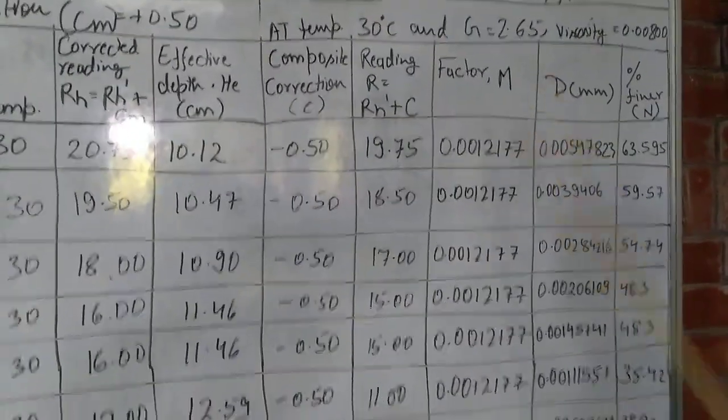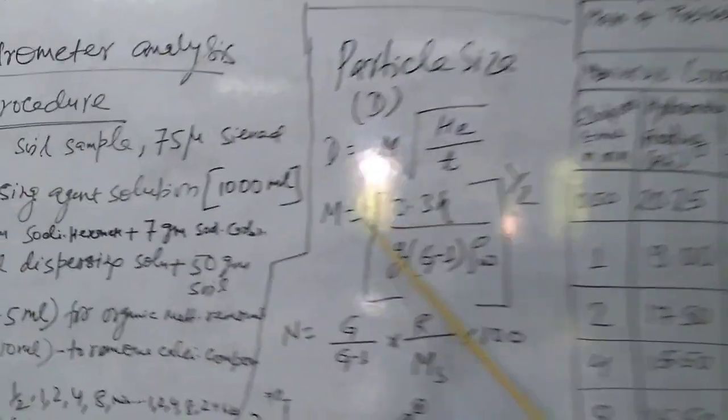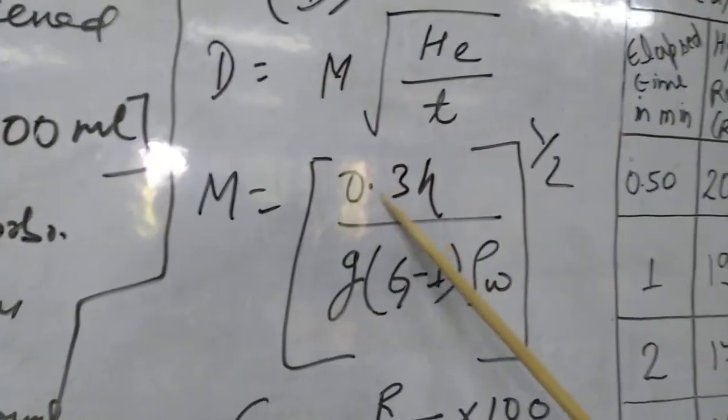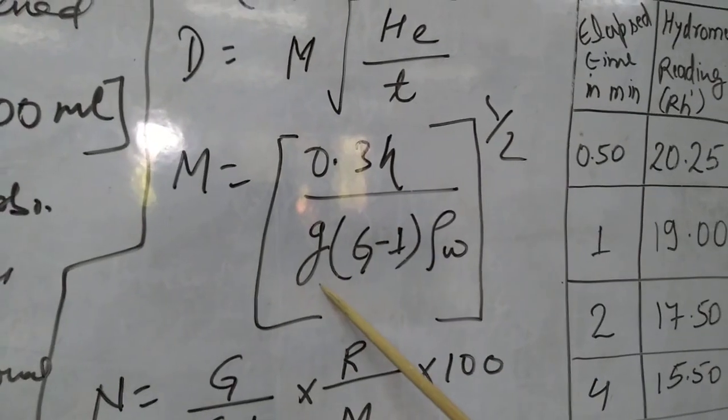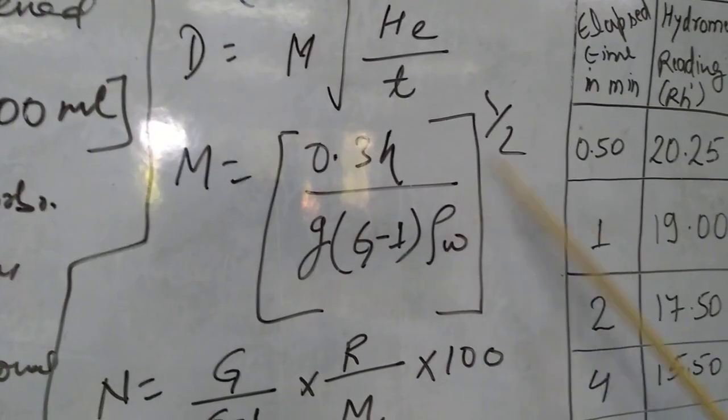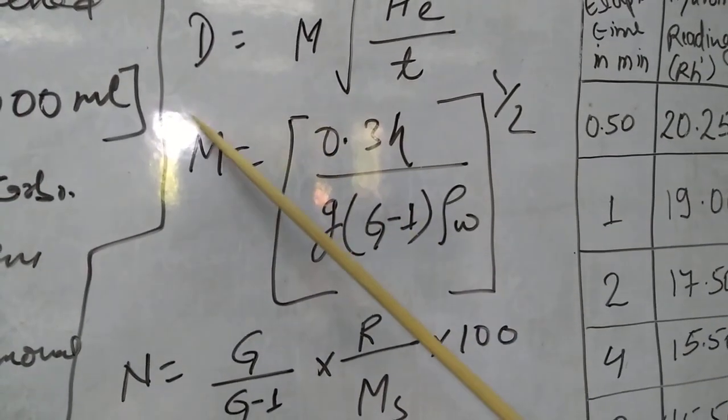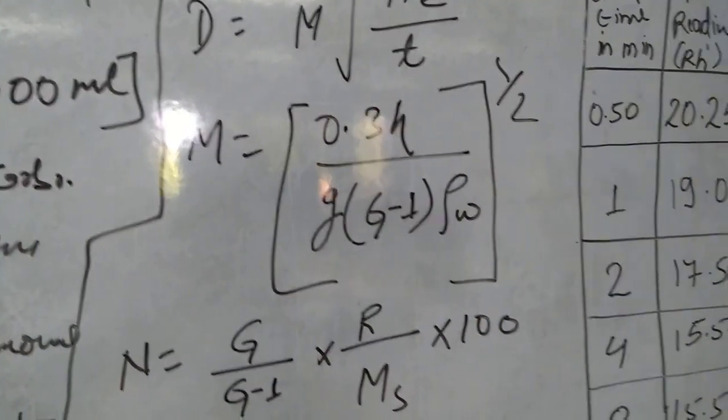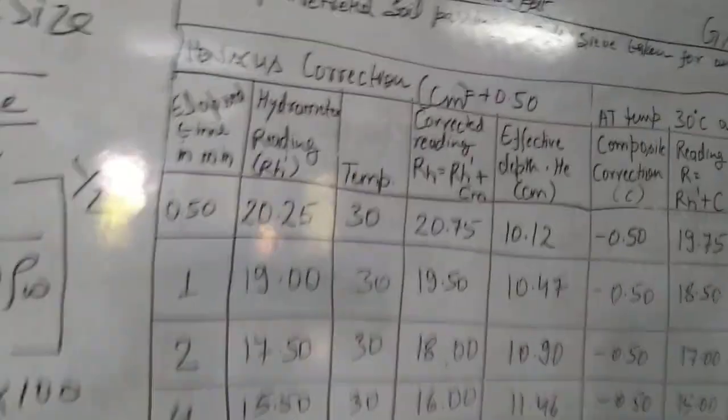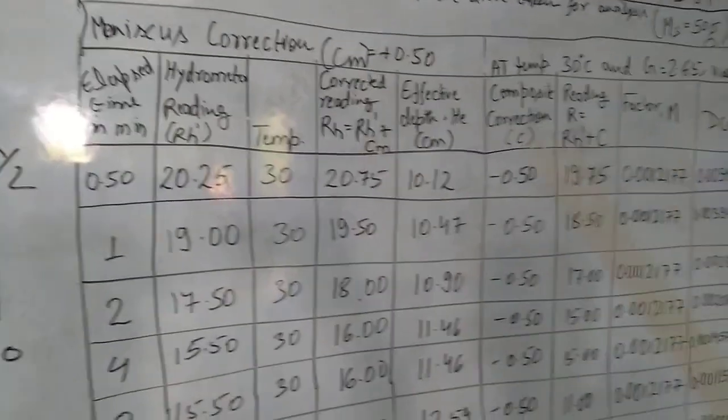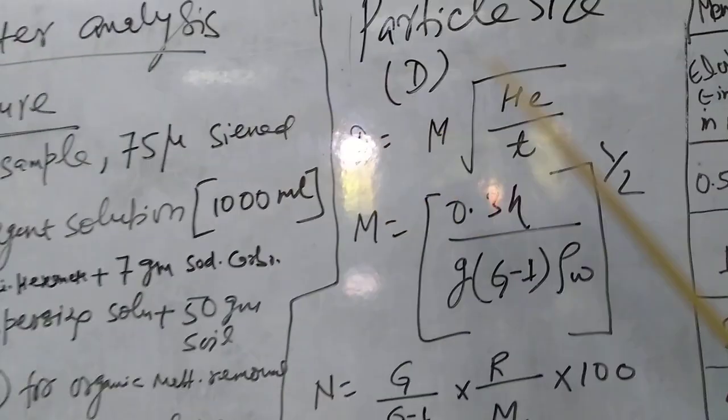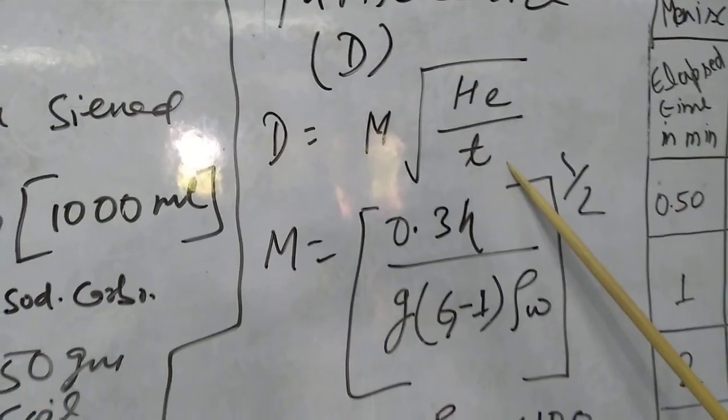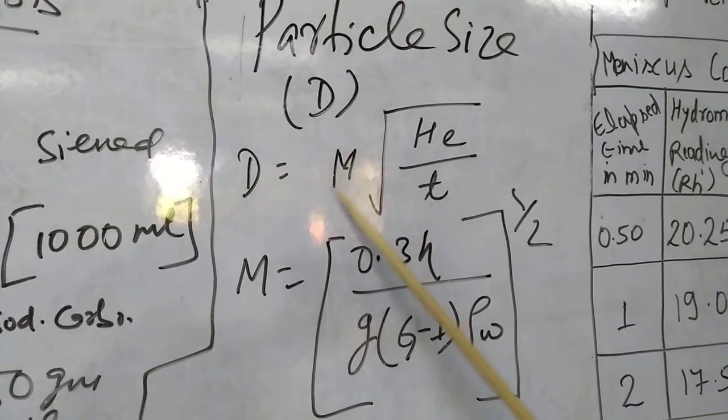Similarly, factor M. The factor M, how we can calculate? The factor M will remain same for all the time intervals. Once you calculate the values of M, then we can find out the particle size. For different values of effective height at different time intervals, M is already fixed. You can calculate the particle size at different time intervals.